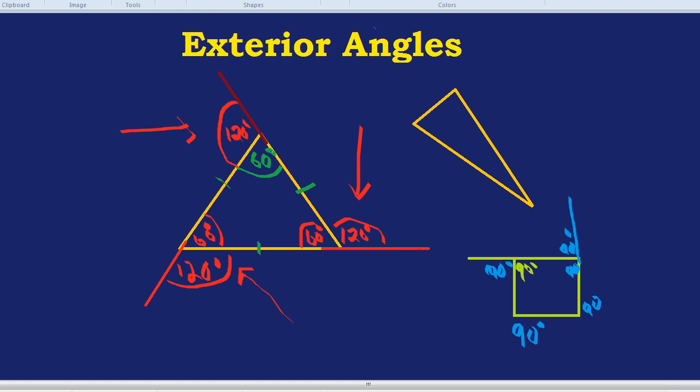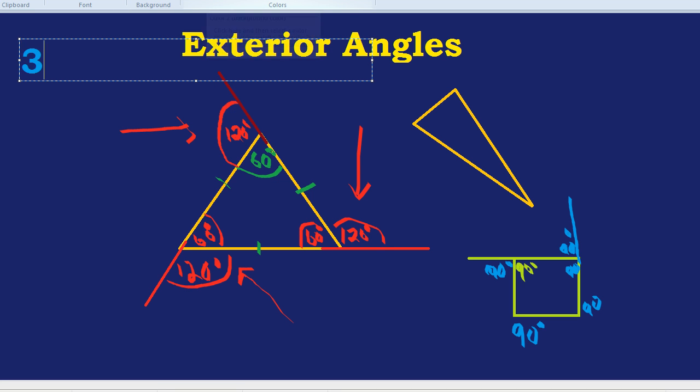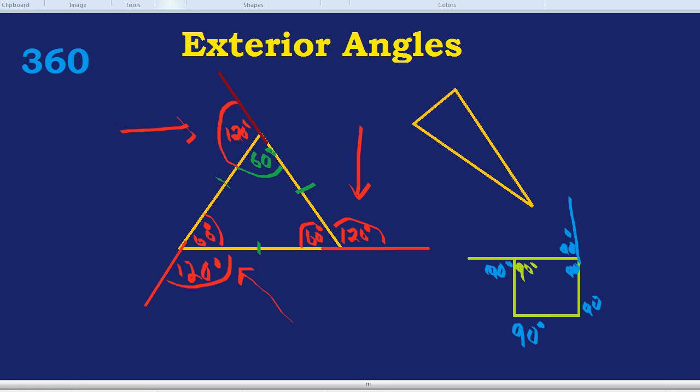We always use 360, so we can definitely write that down. We've got 360 degrees. Now how are we going to get from that? Is there something in maths that we could do to find the exterior angle once we've got 360 degrees?